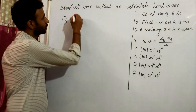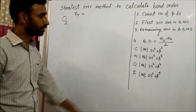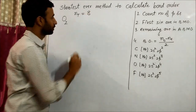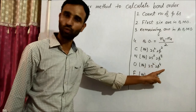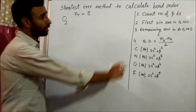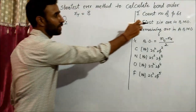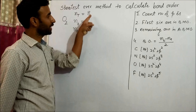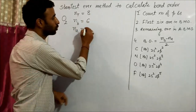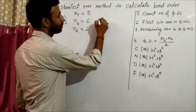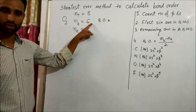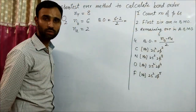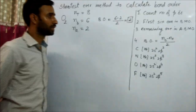Now let's take O2. In O2, oxygen has four p electrons, and since there are two oxygen atoms, total p electrons are eight. First six are in bonding molecular orbitals, so two are left for anti-bonding. Bond order equals six bonding minus two anti-bonding divided by two, which gives four divided by two equals two.